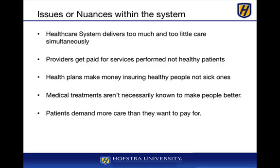Some of the problems in the system: the healthcare system delivers too much and too little care simultaneously. Too much care may reflect over-caution by a provider fearing malpractice, leading to extra tests. Too little care occurs when providers won't perform a service because they won't be paid or the service is denied by an insurance company with no authorization. Providers get paid for services performed, not for healthy patients — this is called fee-for-service. To get paid, providers need sick people coming in. This model is changing with pay-for-performance, but fee-for-service currently dominates.